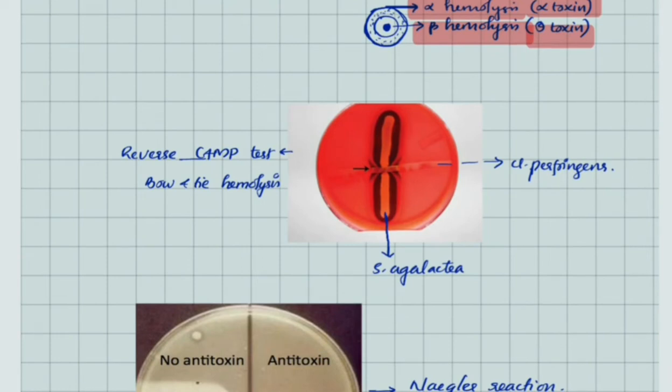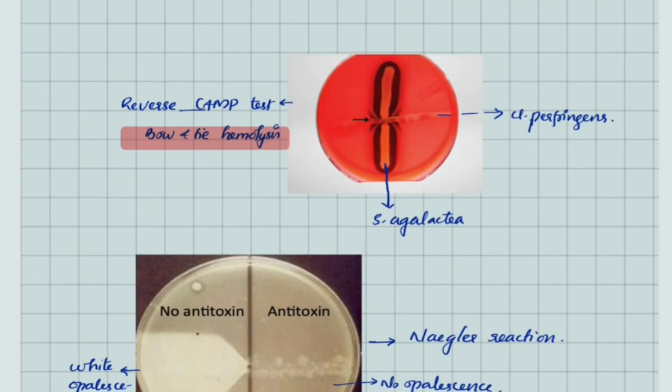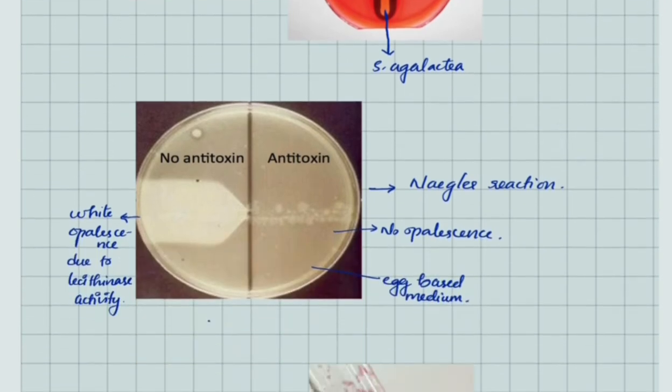Here we see reverse CAMP test that gives inhibition of hemolysis when Clostridium perfringens is streaked against Streptococcus agalactiae. Nagler reaction is done in egg yolk medium—white opalescence is seen where bacterial growth is found due to lecithinase activity. When antitoxin is added to the medium, this opalescence will not be seen.